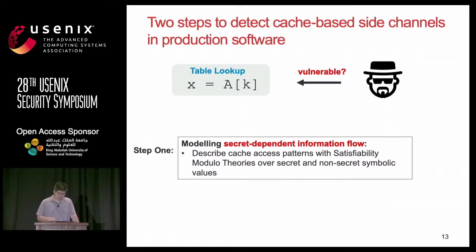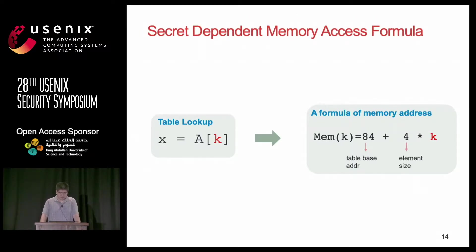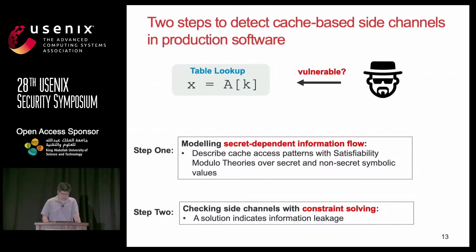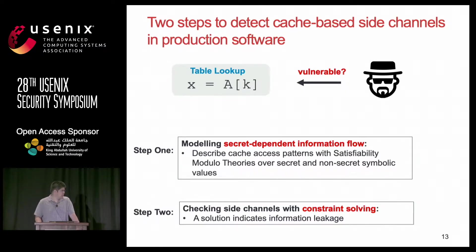We want to detect this kind of possible leakage — potential leakage in your code, especially in your binary code. We propose a two-step approach to detect cache-based side channels. The first step is to model secret-dependent information flow and describe cache access patterns with SMT over secret and non-secret values. In the second step, we check for side channels by solving certain constraints, and if there's a solution, that means there's a potential information leakage.